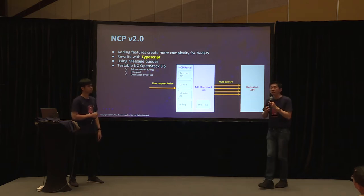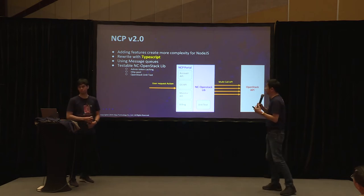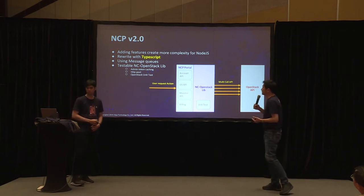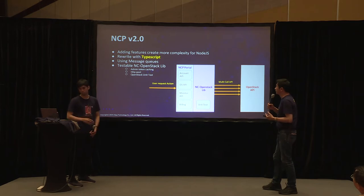Beyond that, we improved our library by adding unit tests. Every time we create a library function, we do a unit test using an OpenStack all-in-one environment — test it first before putting it into the library. We also added admin token caching.